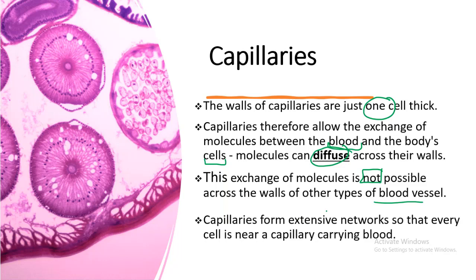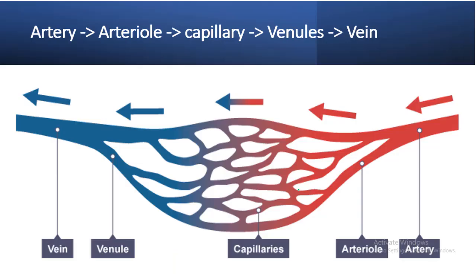Capillaries form an extensive network so that every cell in the body is near a capillary carrying blood. Here is the complete structure of the circulatory system.